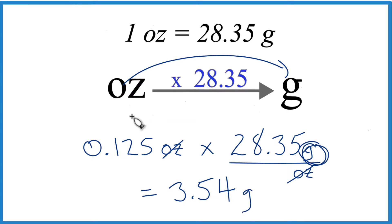That's how you convert one-eighth of an ounce to grams. We converted it to the decimal 0.125, which is the same thing as one-eighth, and then we multiplied by 28.35. This is Dr. B. Thanks for watching.